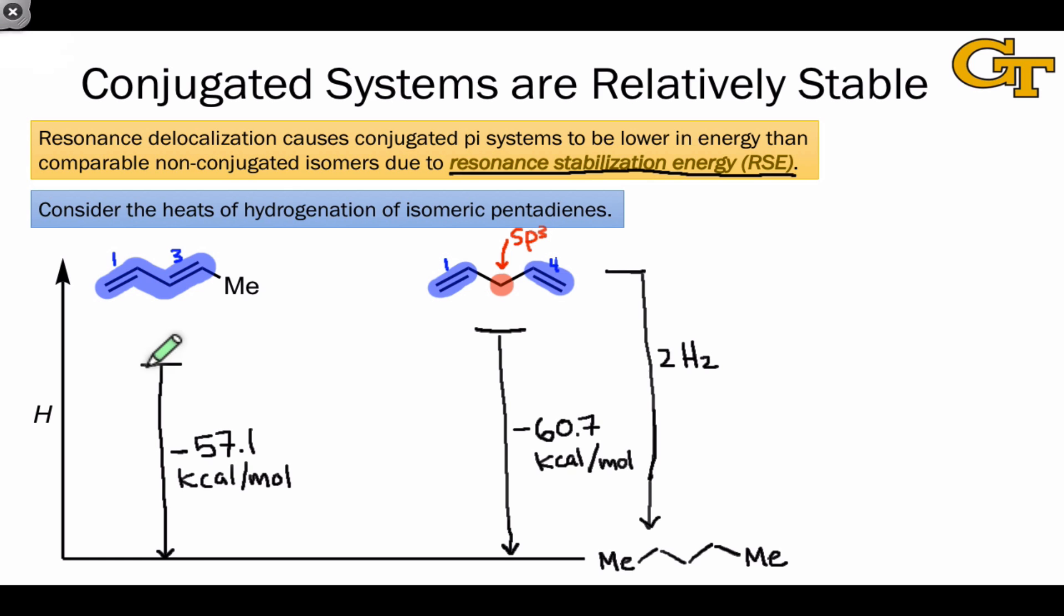Since both hydrogenation reactions are leading to the same product, pentane, these results indicate that the 1,3-isomer is lower in enthalpy than the 1,4-isomer, and this energy difference is due to conjugation and resonance. What we can say is that the introduction of delocalization by linking the double bonds to one another causes a stabilization of the molecule by about 3.5 kcal per mole.